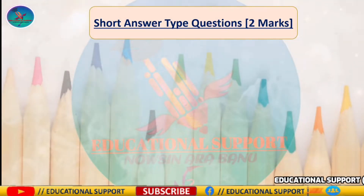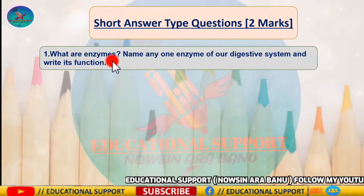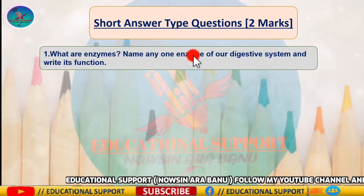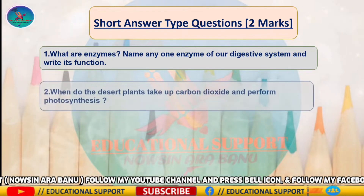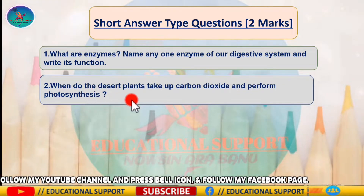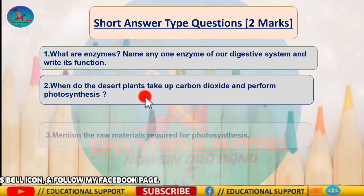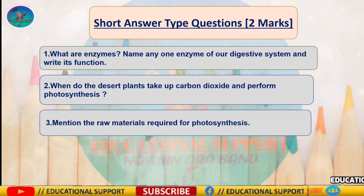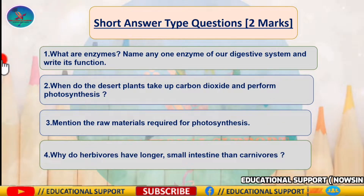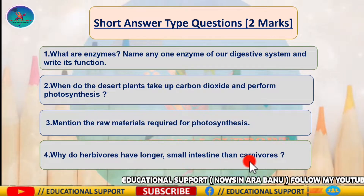Short answer type — two mark questions. Question one: what are enzymes? Name any one enzyme of our digestive system and write its function. Question two: when do desert plants take up carbon dioxide and perform photosynthesis? Question three: mention the raw materials required for photosynthesis. Question four: why do herbivores have a longer small intestine than carnivores?